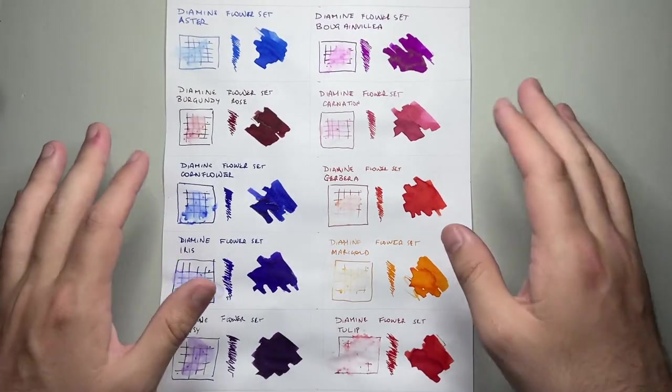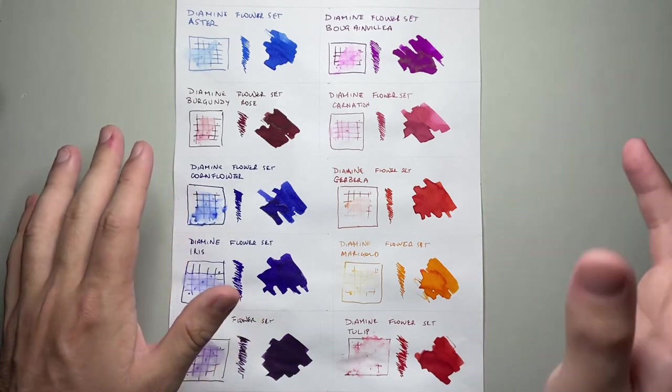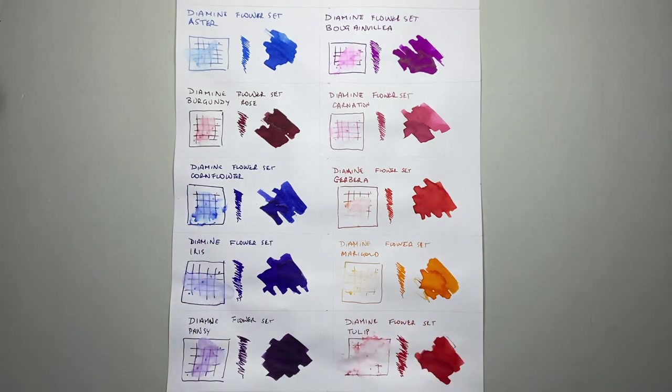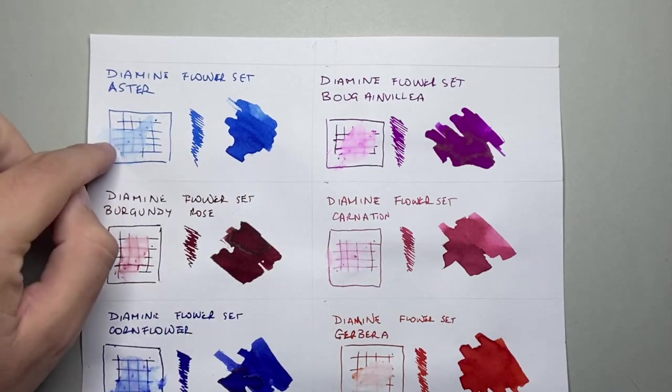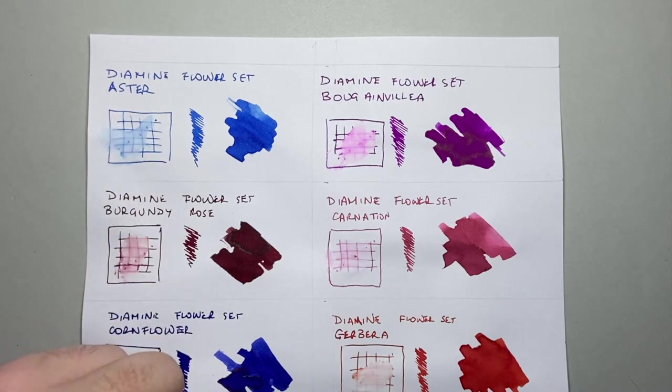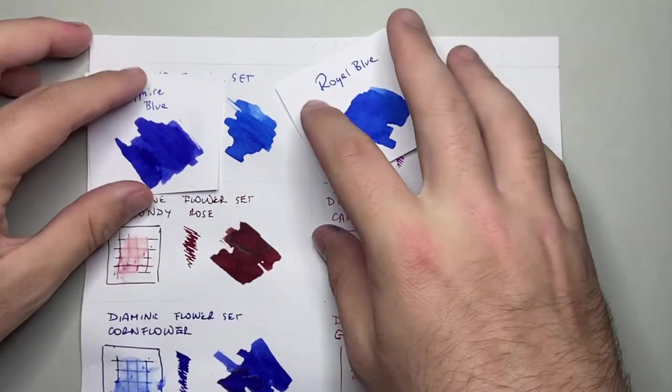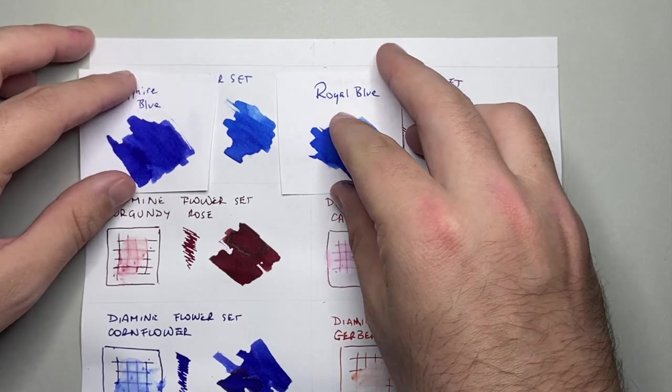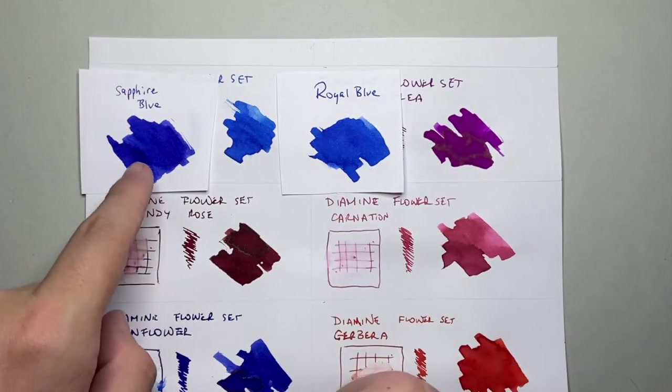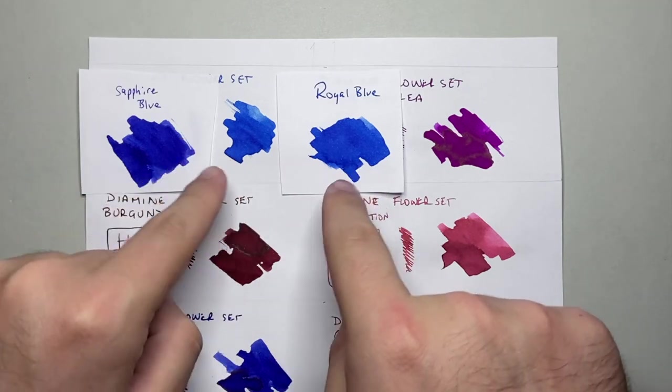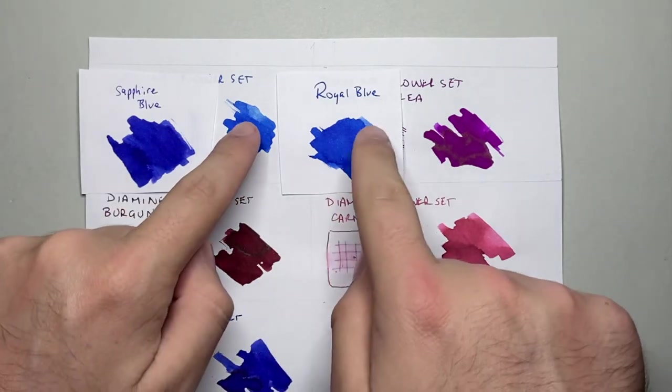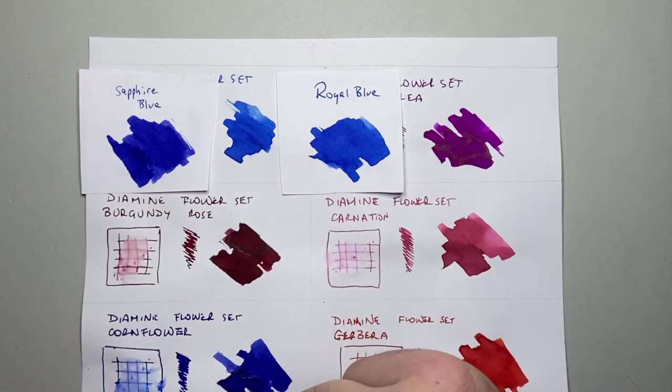But here I'll do some color comparisons and just show what the ink can sort of do. Okay, so we start here with Aster, which is a nice sort of light royal blue. When it's hit with water, it moves around a bit, but there is a little bit that is sort of left behind there, which is encouraging to see. Comparisons I've made here, these are all the comparisons I will make are from Diamine. And what I put here is Royal Blue and Sapphire Blue. So you can see it's quite similar to Royal Blue. But yes, it's not quite exactly the same, but sort of some nice shading that is quite similar there.